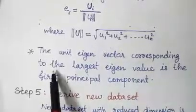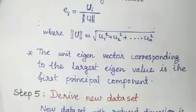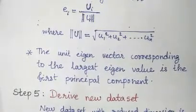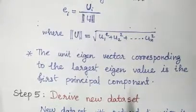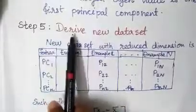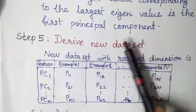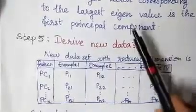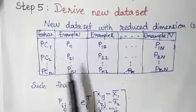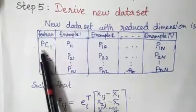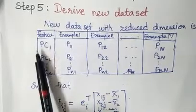The unit eigenvector corresponding to the largest eigenvalue lambda 1 is the first principal component e1. Step 5 is to derive the new dataset: using the first principal component (the normalized eigenvector of the largest eigenvalue), we project the original data to create the reduced-dimensional new dataset. The features of the new dataset are the principal components PC1, PC2, etc.